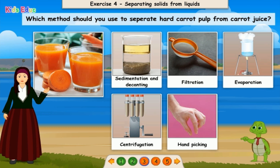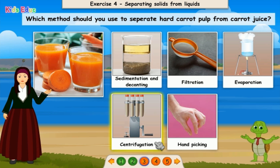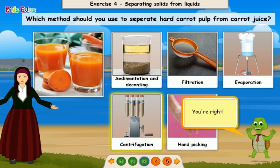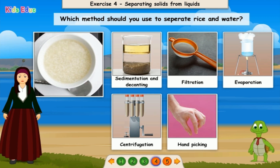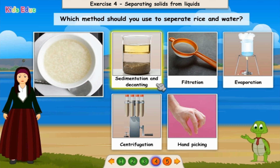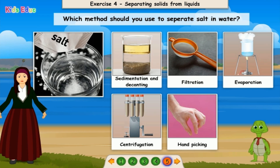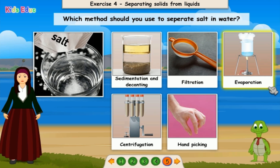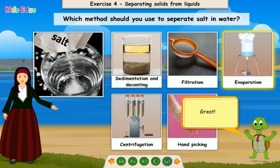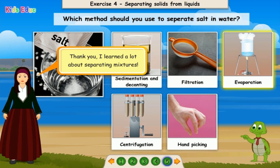Which method should you use to separate hard carrot pulp from carrot juice? Centrifugation. You're right! Which method should you use to separate rice and water? Sedimentation and decanting. You're doing great! Which method should you use to separate salt in water? Evaporation. Great! Thank you. I learned a lot about separating mixtures.